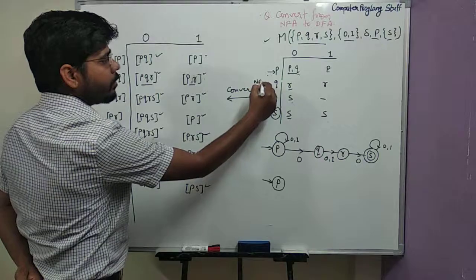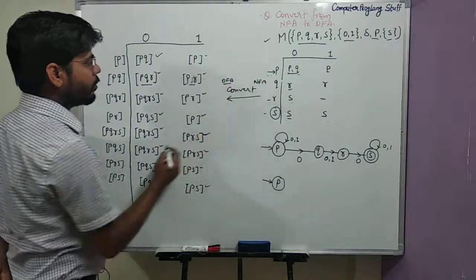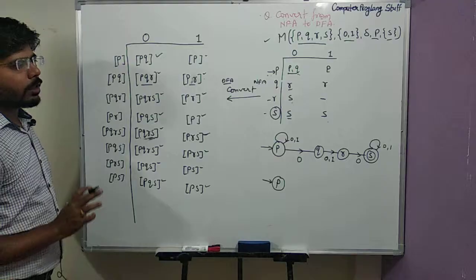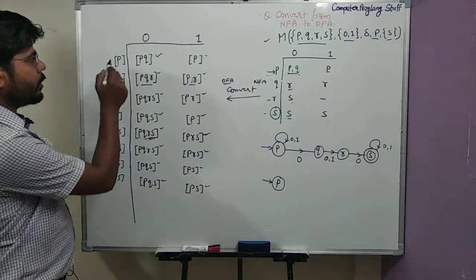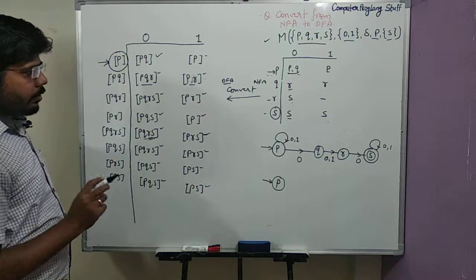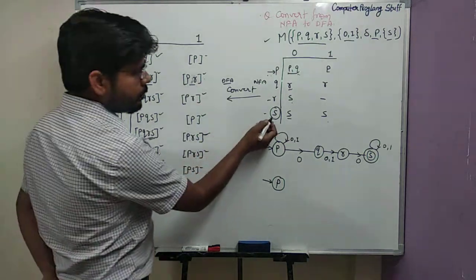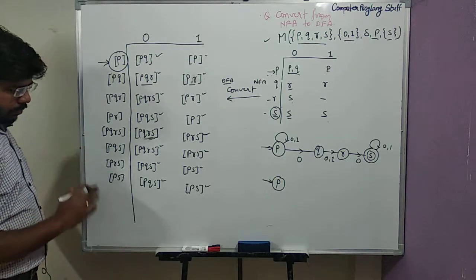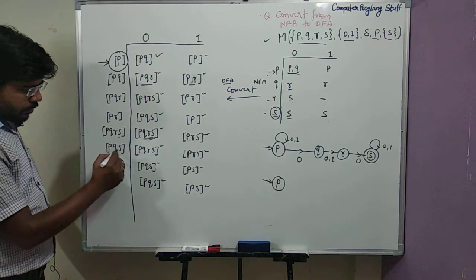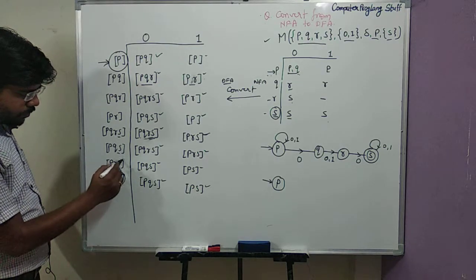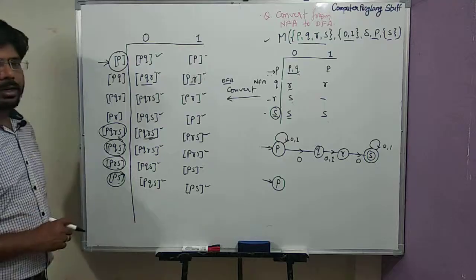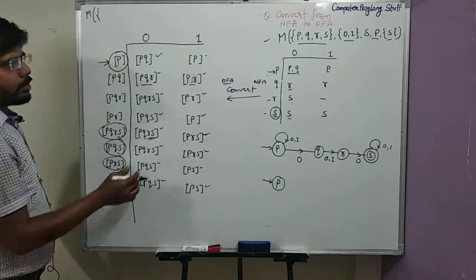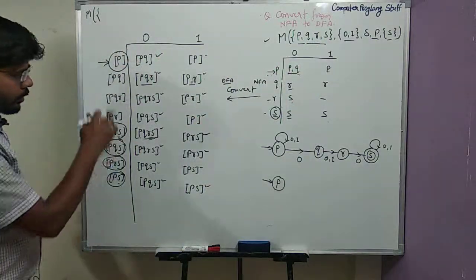This is your NFA and this is your DFA converted from it. States written in brackets represent a single composite state. The initial state is P. Regarding the final states: in the original NFA the final state is S, so all DFA states that contain S are also final states. The original NFA has four states — P, Q, R, and S — so the DFA has up to eight states.